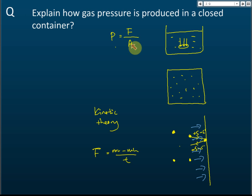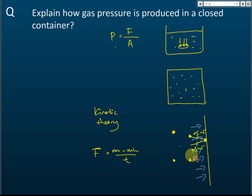That is how gas pressure is produced — through collisions of gas molecules on the wall and bouncing back. The bounce-back is essential to produce the velocity change that leads to the force.